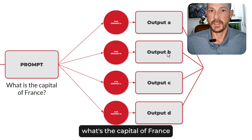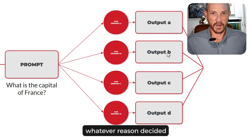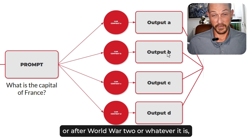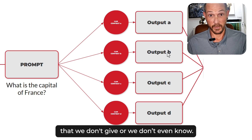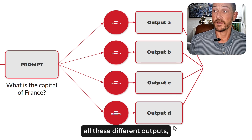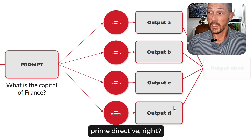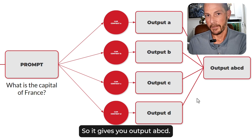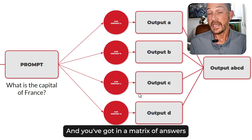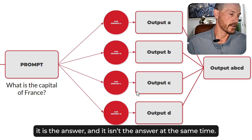If you get into trunk B, everything from there produces that output. So if you say 'What's the capital of France?' and it says Bordeaux — because you didn't give it a time frame — it decided for whatever reason to use pre-World War I or post-World War II context, depending on too many variables we don't control or even know. It can't give you multiple outputs, so you end up in a matrix of answers — Schrödinger's answer — it is the answer and it isn't the answer at the same time.